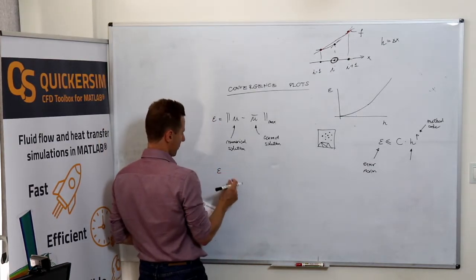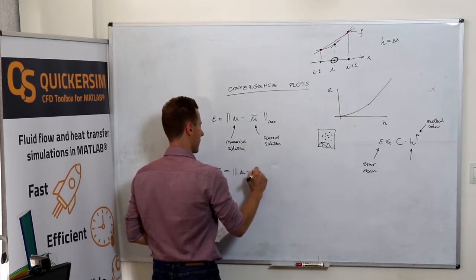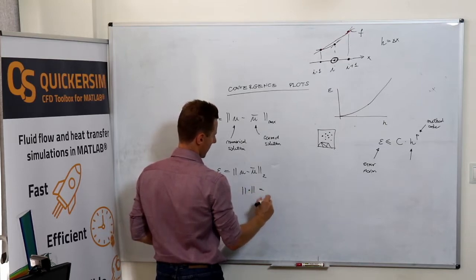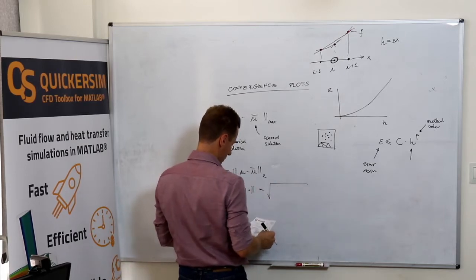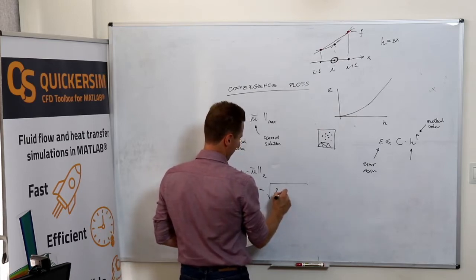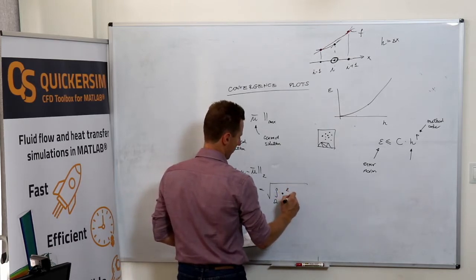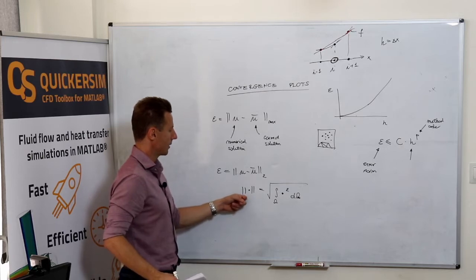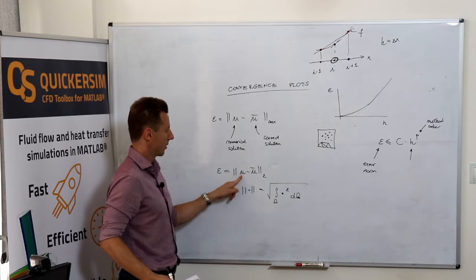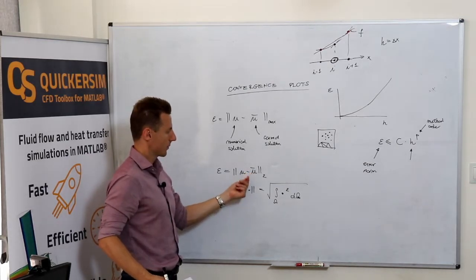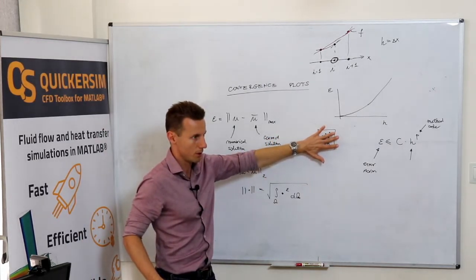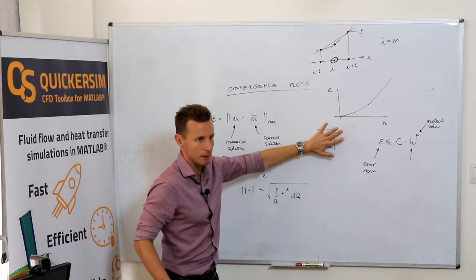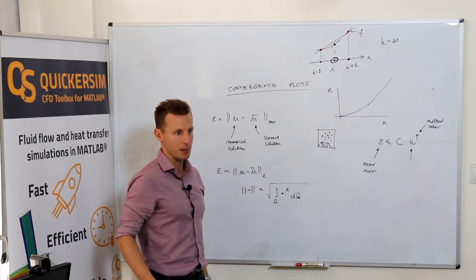The other possibility is taking the L2 norm, and the L2 norm can be written like this. L2 norm of something is calculated as the square root of the integral of the whole domain from that function to the power of 2 integrated over the whole domain. So basically, what you are taking, if you're interested in the L2 norm of the error, you generate the field of the numerical solution minus the analytical solution, so you've got the error distribution on your mesh. You calculate the square of the error, integrate over the whole domain, and then you take the square root of the integral value.